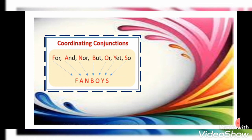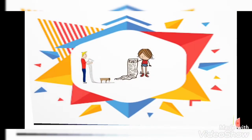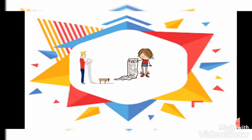Now that we know the meaning of both sentence types, we can change them. In a simple sentence we have one independent clause, whereas in a compound sentence we have two independent clauses. So we will add a coordinating conjunction to convert a simple sentence into a compound sentence.